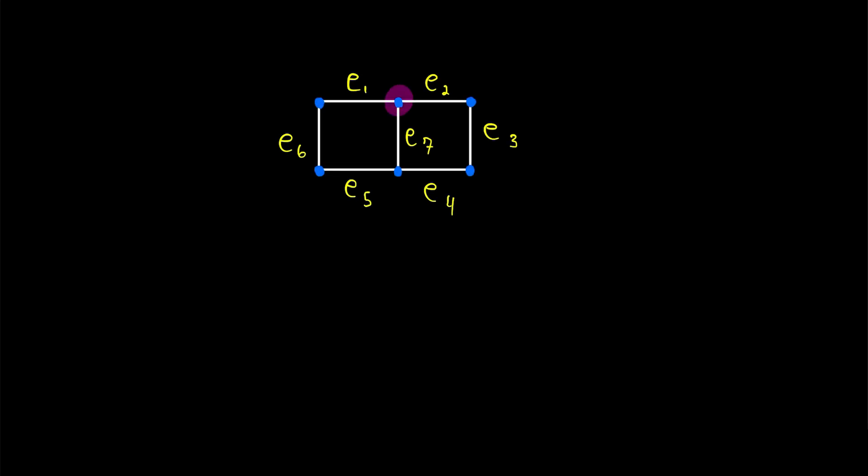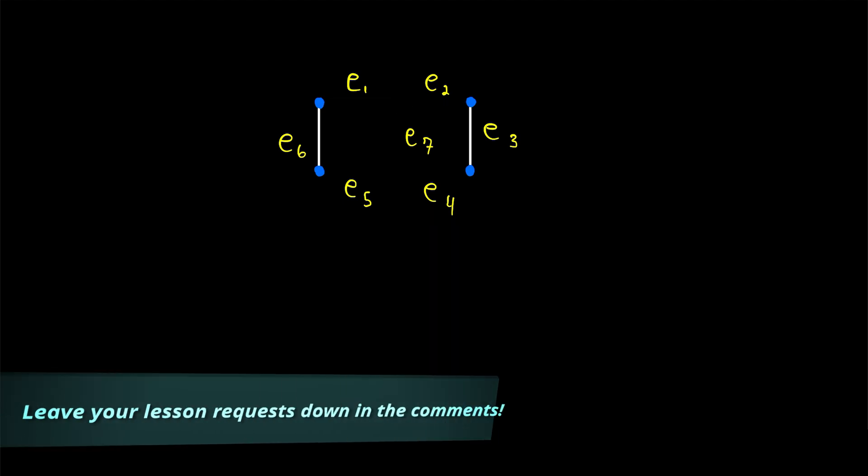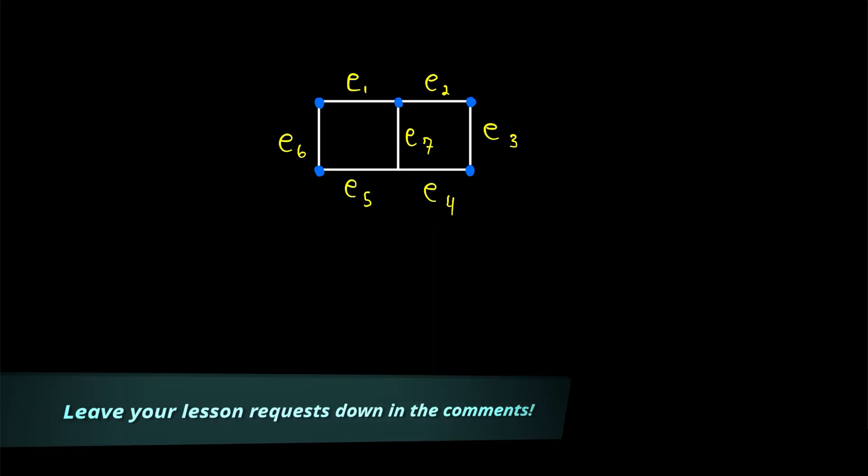Perhaps you are familiar with vertex cuts. A vertex cut of a graph is a set of vertices that, when deleted, disconnects the graph. In today's Wrath of Math lesson, we'll be talking about a similar concept, but for edges.